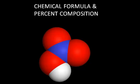Chemical formula and percent composition. There's a lot we can learn about a compound from its chemical formula. Not only does the formula give us the type and number of atoms in the chemical compound, but from that information we can also determine the percent composition by mass of all the elements in that compound.